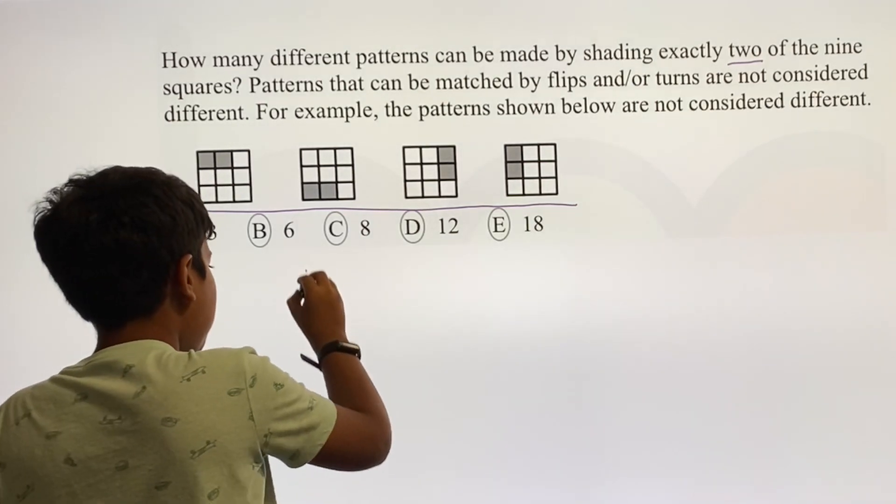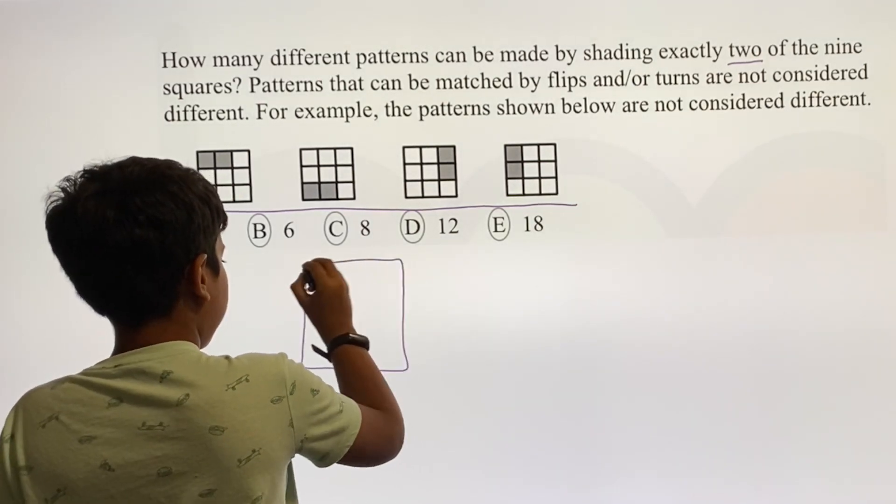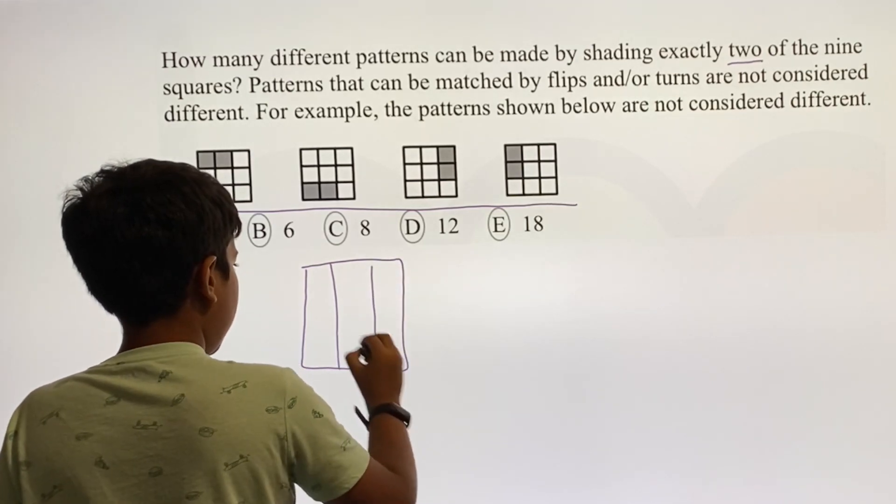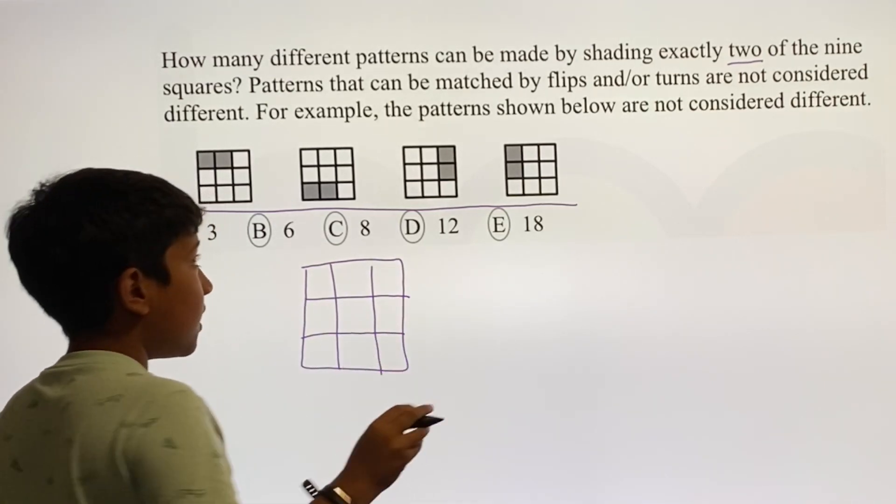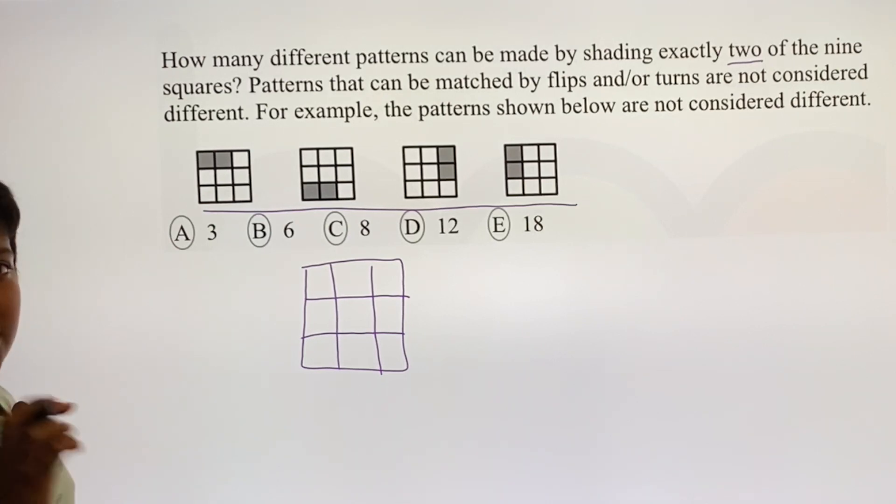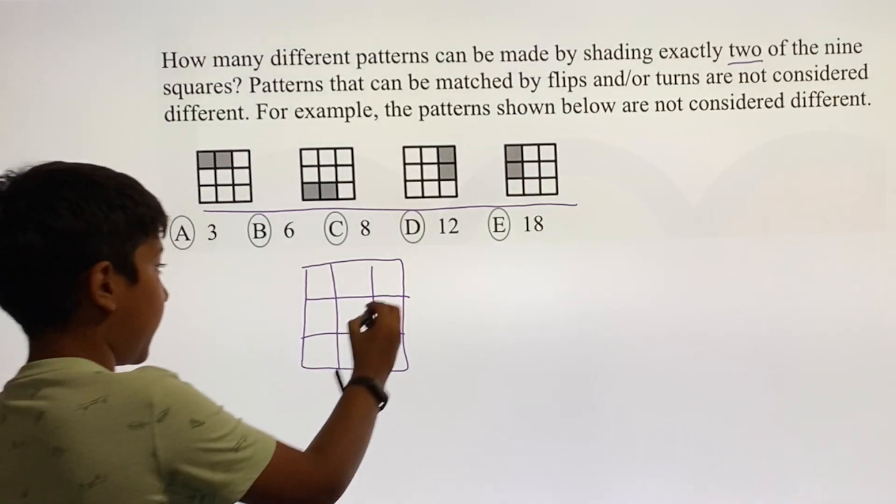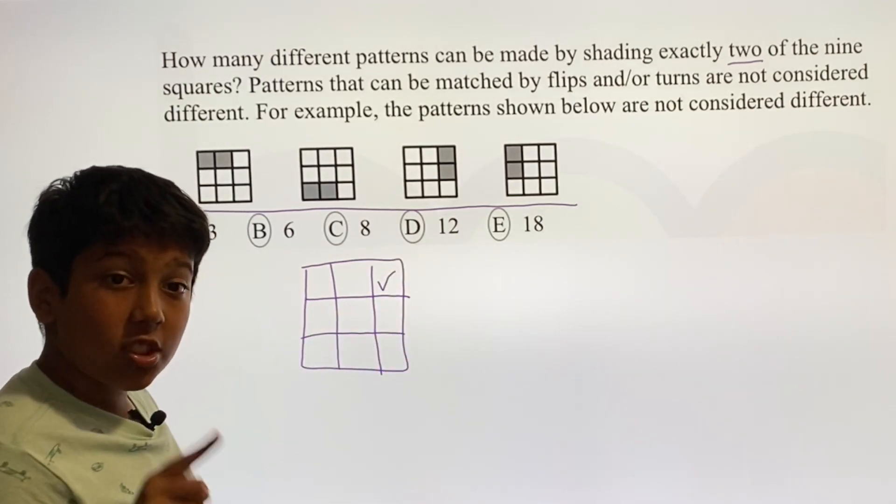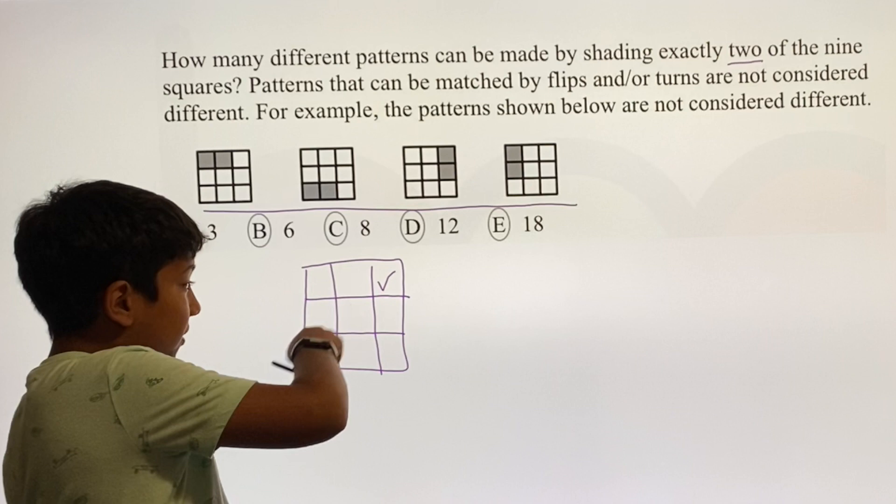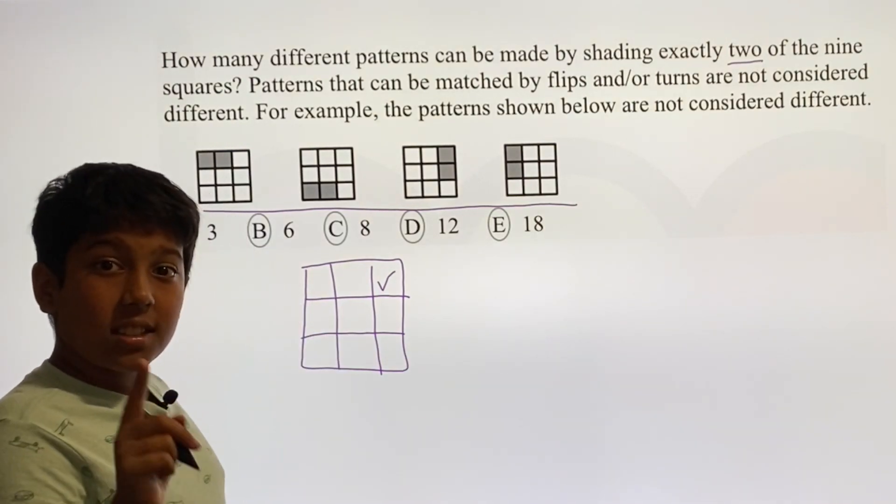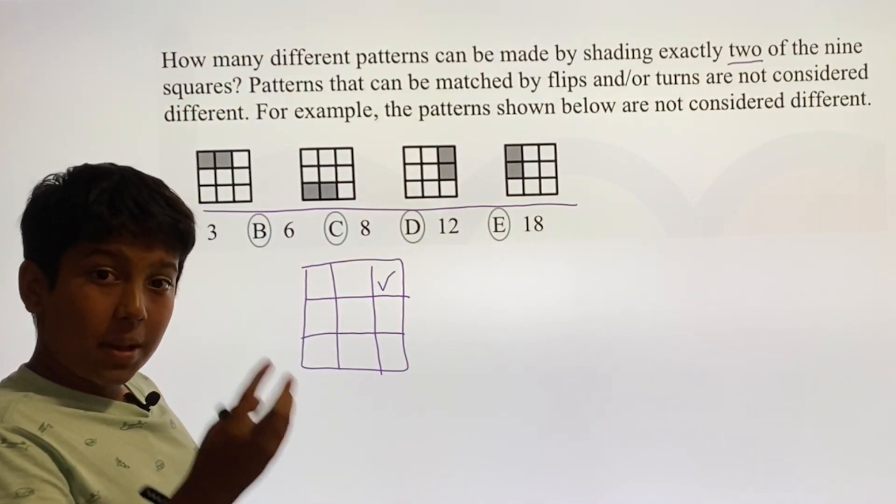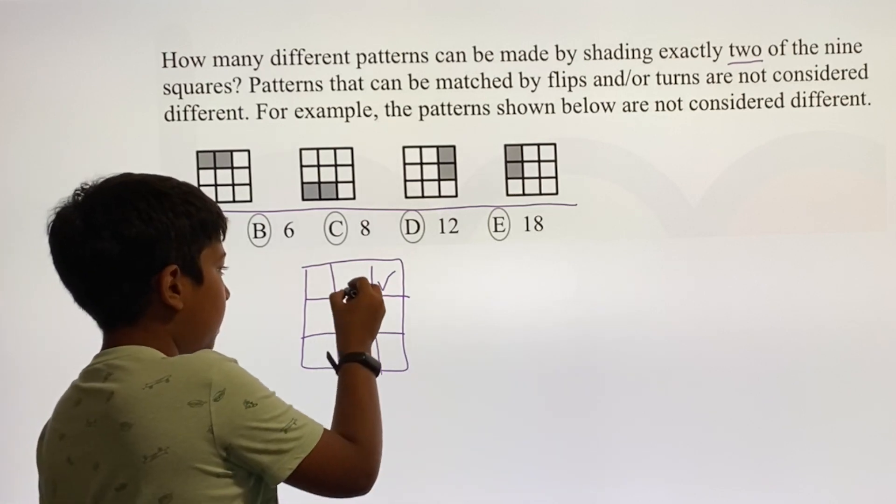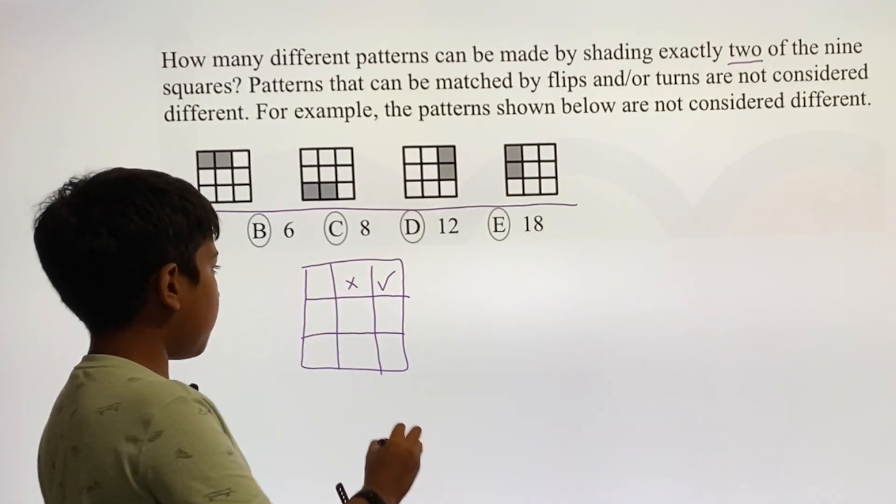First, let me draw a three by three box. Let's say that one of the squares will be at the edge. Now let's try to find out as many different ways as we can to see how many different pairs we can make. We can make one here, we can make one here.